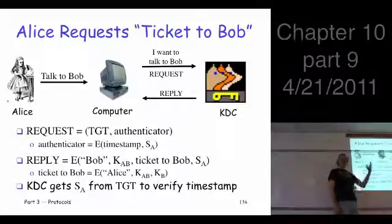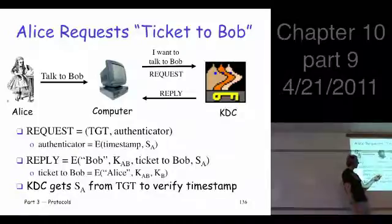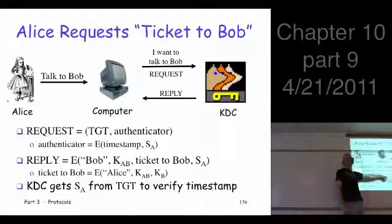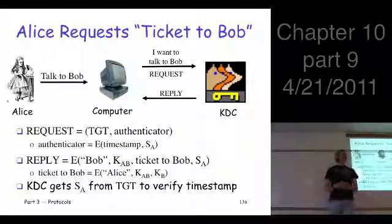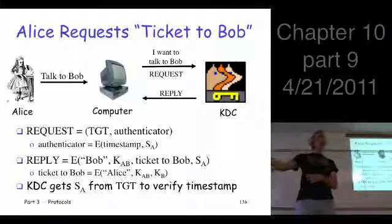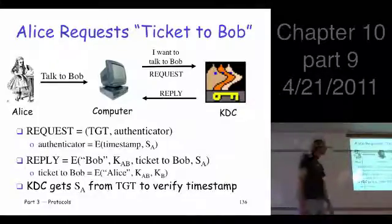Well, the point is you might have several things going on at once, and this is the one you're trying to talk to Bob. And this is the key, K-A-B. It's telling you this is the session key that you and Bob will use to talk to each other. Then it gives you this ticket to Bob, meaning you go and present it to Bob, and then Bob will talk to you. That's the idea.